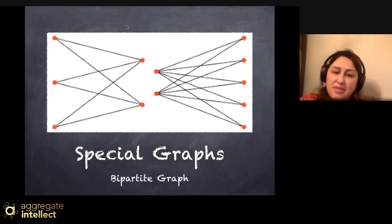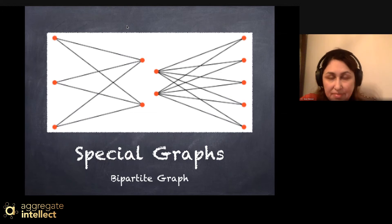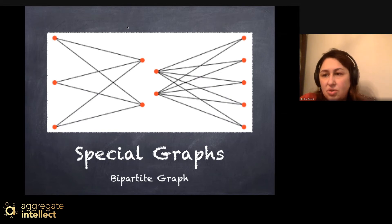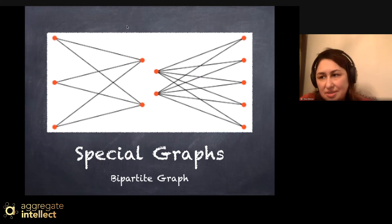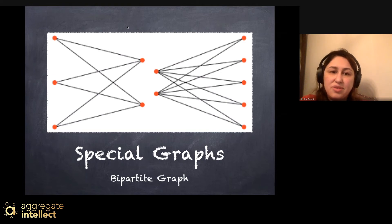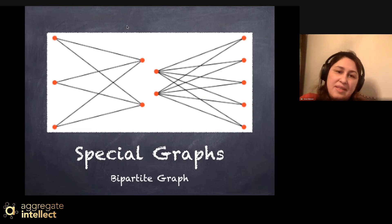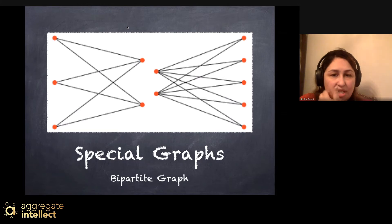Another type of graph often used in cybersecurity is the bipartite graph, or bi-graph. It's a graph where you can divide the vertices into two disjoint sections that are independent of each other. Each node connects to other nodes only in the other section, not within its own section.